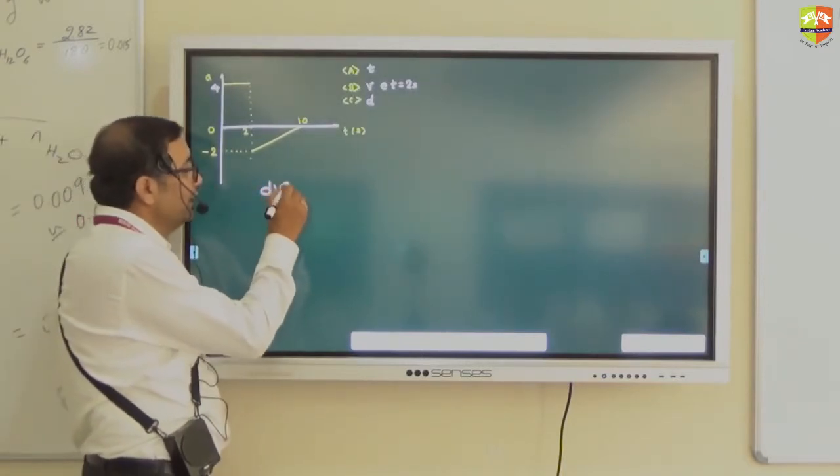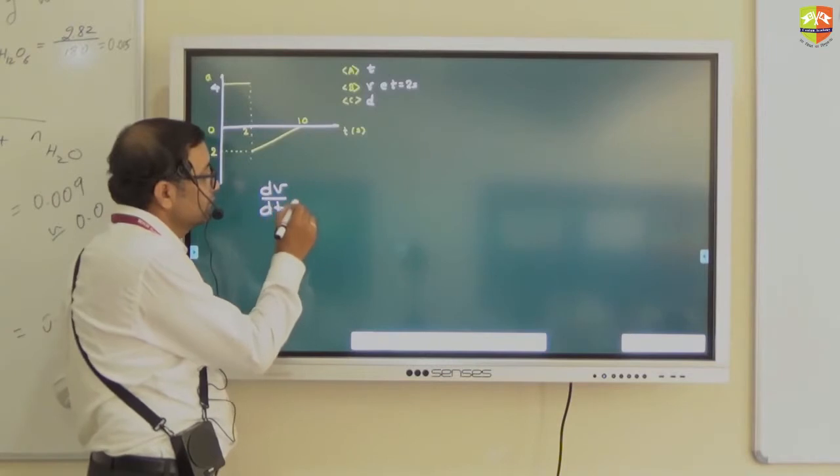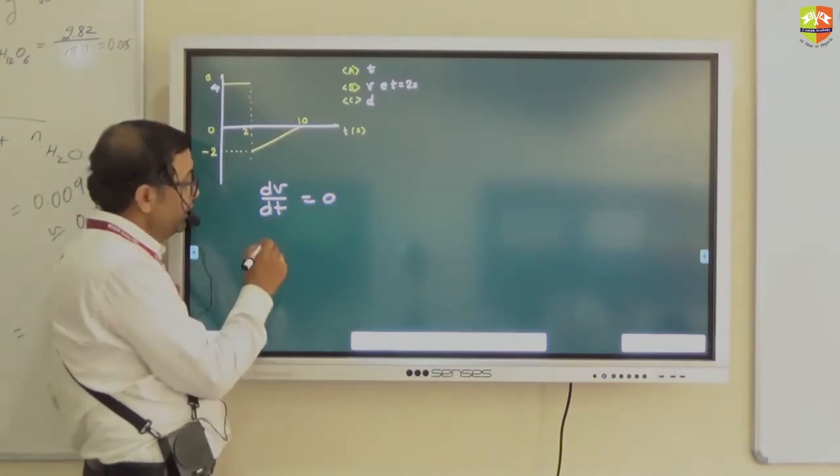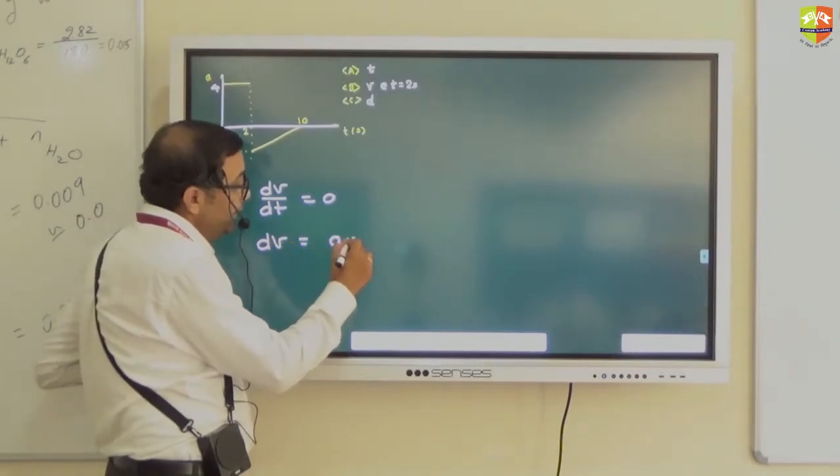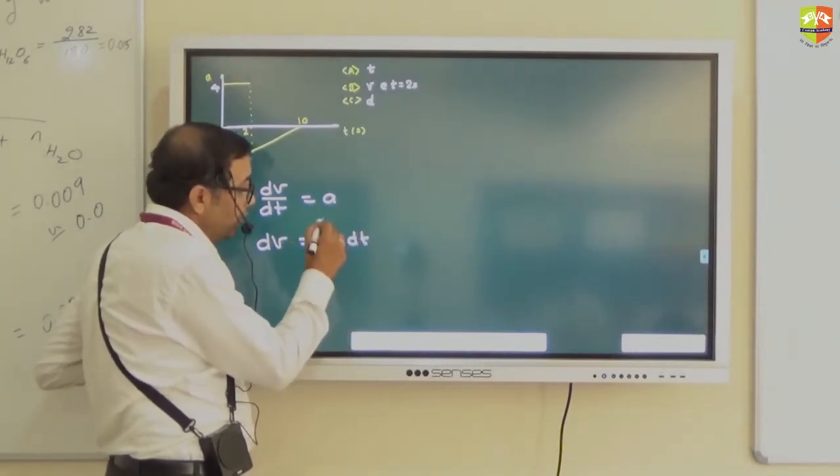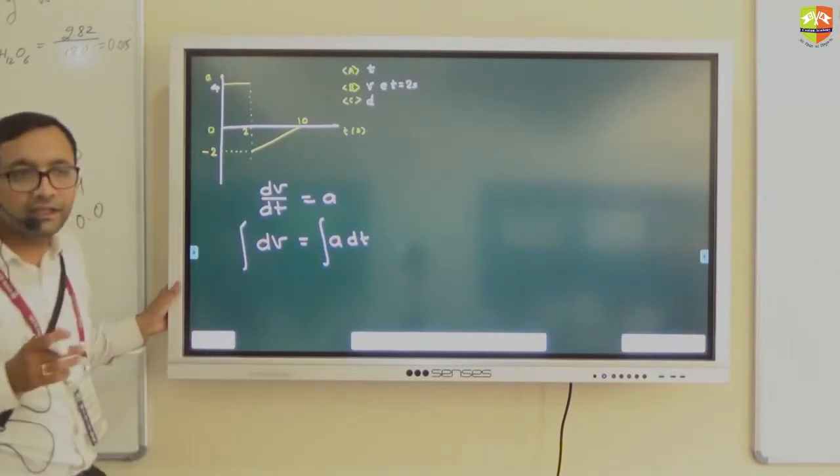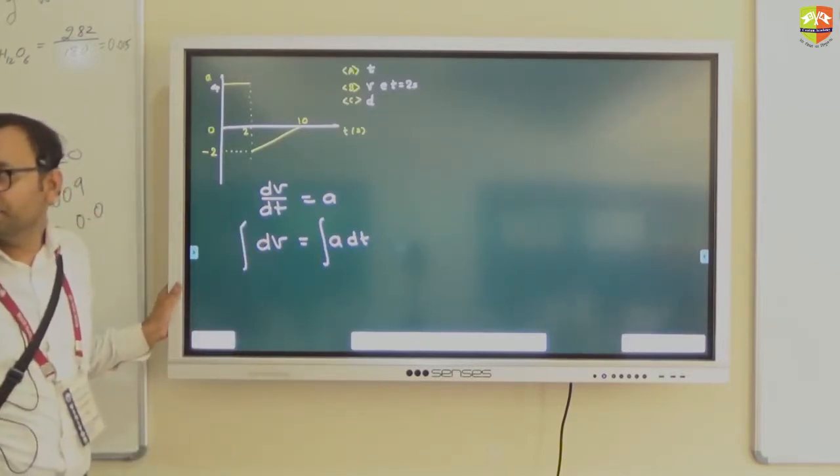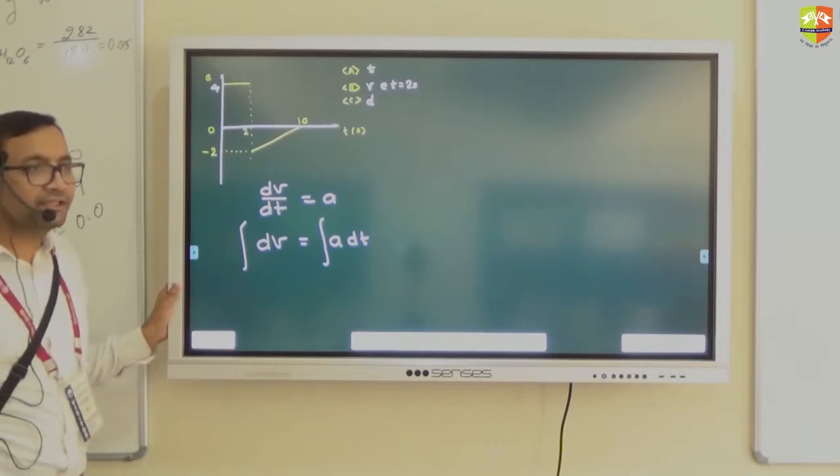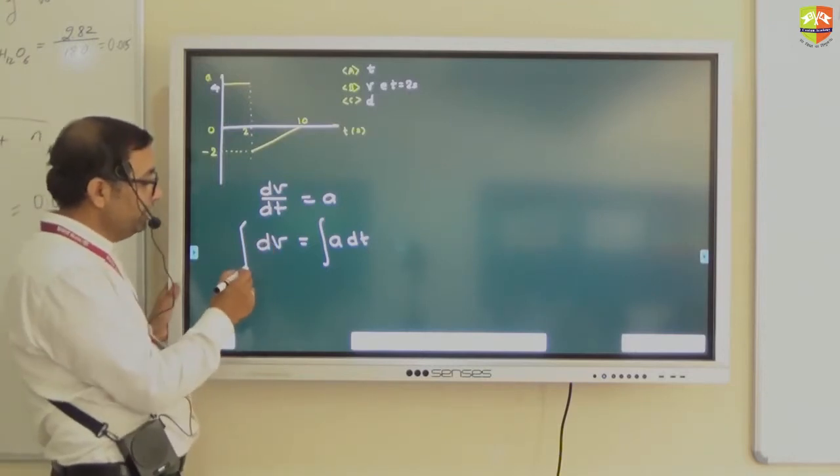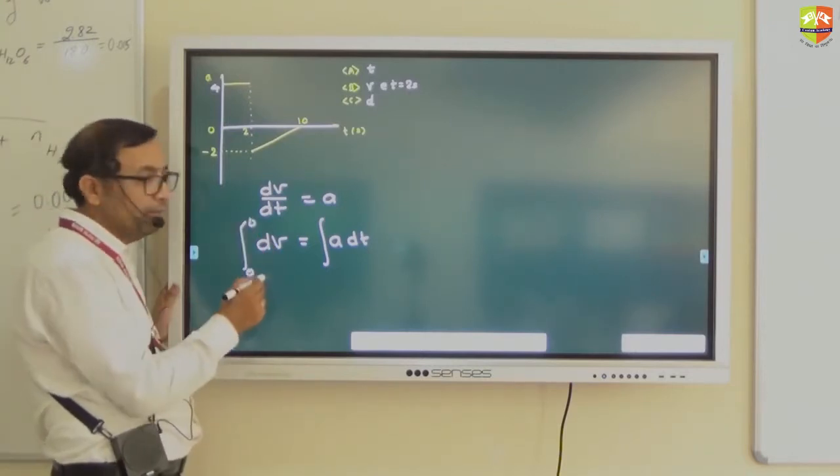So, I know that dV by dt is what? Acceleration. Okay? So, dV is A dT. What is integral A dT in the graph? What is A dT? Area of the graph? A dT is the area of A dT graph or not? Right? And limits what dV is got. From 0 to 0 it should be. This is from 0 to T. So, integral should be 0.